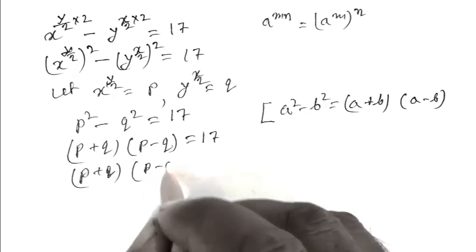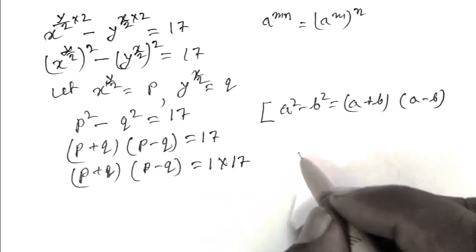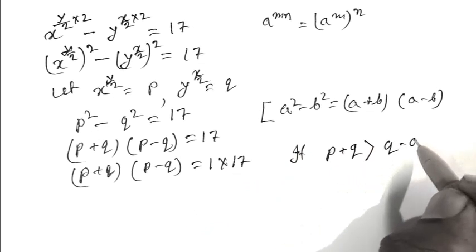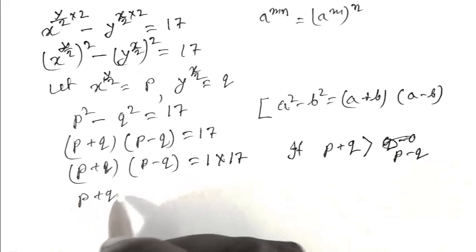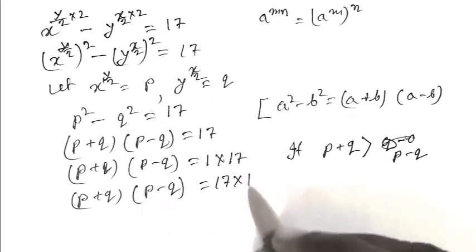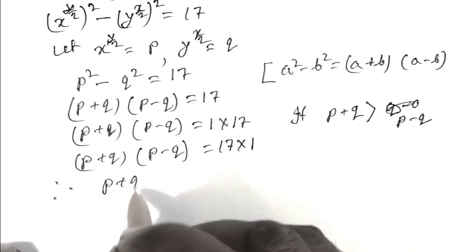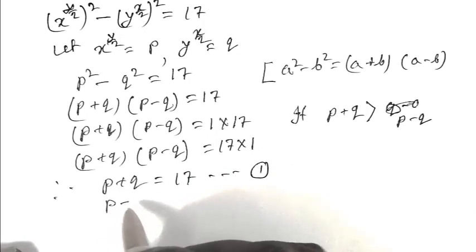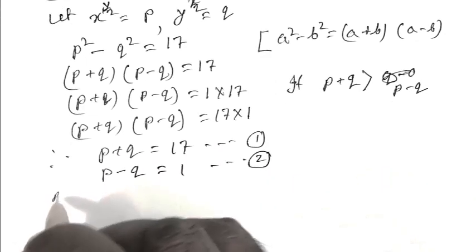We can write p plus q times p minus q equals 1 multiplied by 17. Since p plus q is greater than p minus q, we set p plus q equal to 17 — this is equation number 1 — and p minus q equal to 1, which is equation number 2.